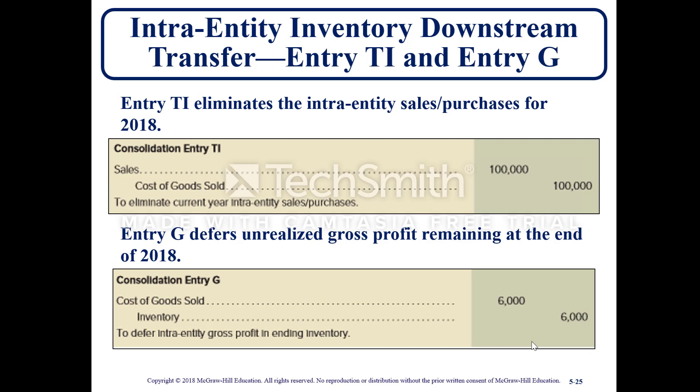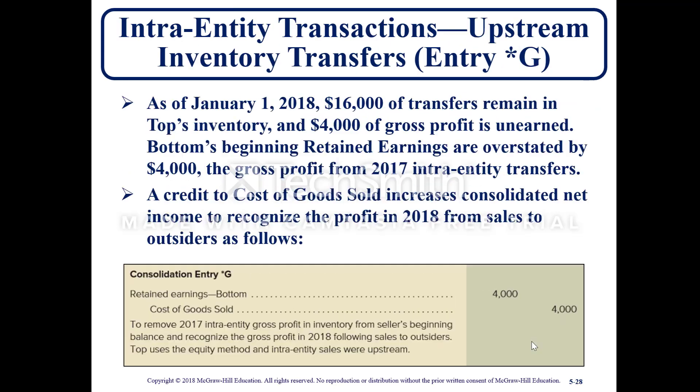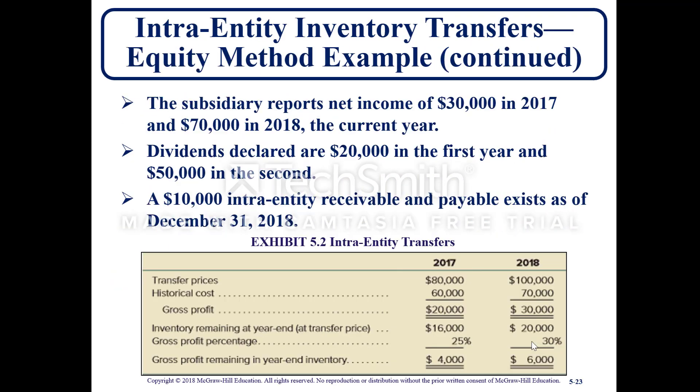For downstream transfers, entry TI eliminates the intra-entity sale and purchase: sales is debited for $100,000 and cost of goods sold is credited for $100,000 to eliminate current year intra-entity sales and purchases. Entry G defers unrealized gross profits remaining at the end of 2018: cost of goods sold is debited for $6,000 and inventory is credited for $6,000 to defer the intra-entity gross profit in ending inventory, based on the transfer price and gross profit remaining in inventory from Exhibit 5.2.